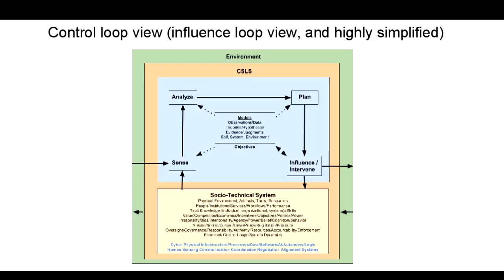These systems would also include human sensing mechanisms, communication infrastructures, large-scale group coordination and negotiation mechanisms, and incentives to align human actions with overall system objectives. At one level, turning a socio-technical system into a cyber social learning system involves the incorporation of all of this advanced, human-centered computing into these systems.